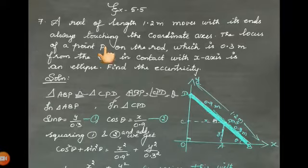The locus of a point P on the rod, which is 0.3 meter from the end in contact with x-axis, is an ellipse. The locus of the moving point P is an ellipse. Let the point P have coordinates x, y. Find the eccentricity. We need to find the value of e, and this is an ellipse.